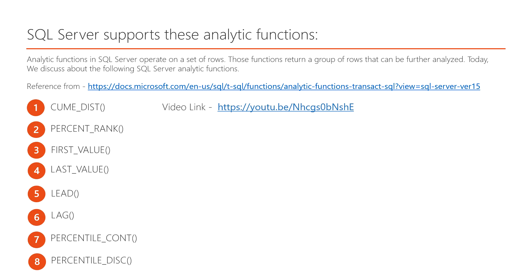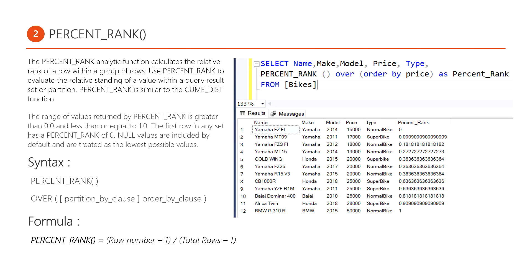What is the percentage rank analytic function? The percentage rank analytic function is similar to cumulative distribution functions, and these analytic functions work on a set of rows. The percentage rank function calculates the relative rank of a row within a group of rows. Use percentage rank to evaluate the relative standing of values within a query result set or a portion. Basically, the percentage rank function evaluates each row and gives a specific rank to that row.